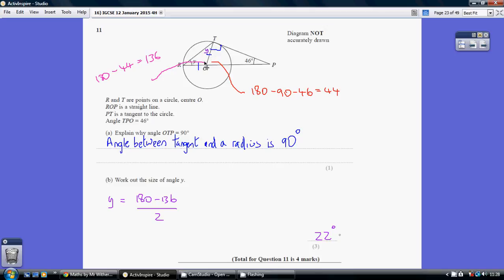Y plus Y plus 136 equals 180. So to work out Y, we do 180 take away 136, which gives us 44. So that 44 is spread equally between these two Ys. So each of these angles is 44 divided by 2, which is 22 degrees. So Y equals 22 degrees.